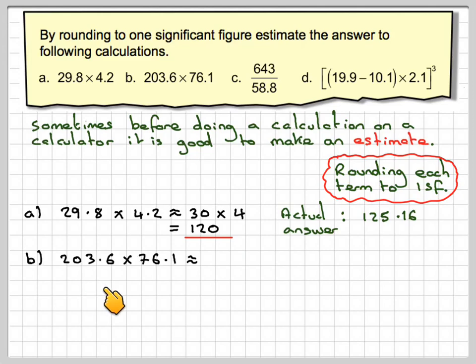Part B, 203.6 times 76.1. Well 203 to one significant figure, that 0 has no effect on the 2, so that will become 200. 76.1 to one significant figure, that 6 will make that 7 an 8. And then we need to do 2 times 8, which is 16, and then add in three 0s. And that's compared with the actual answer of 15,493.96.